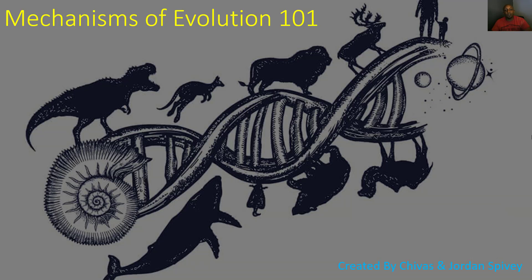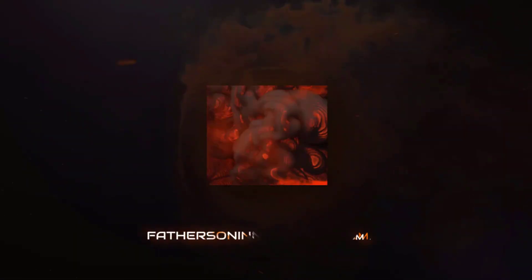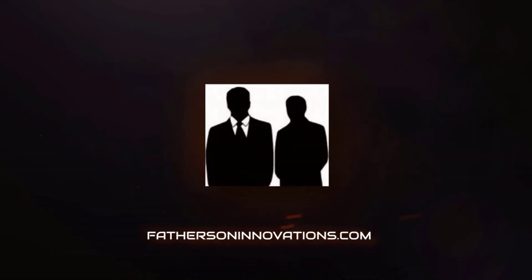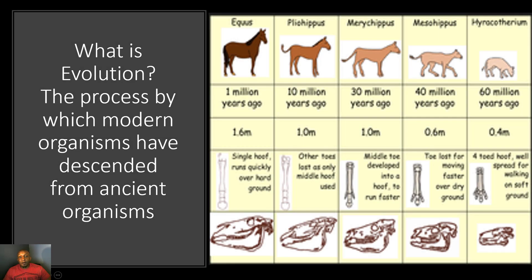Before we start on the mechanisms of evolution, it's important to understand what evolution is. Evolution is the process by which modern organisms have descended from ancient organisms — basically, change over time. We'll use the horse as an example.